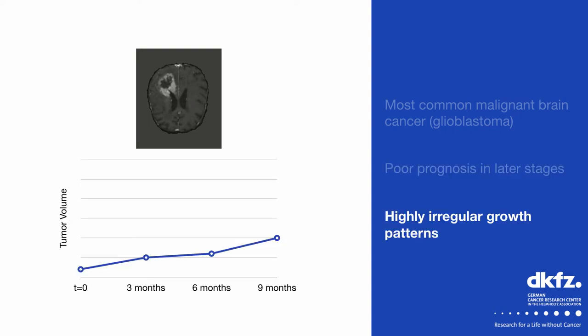One characteristic of these tumors especially important for our work is the fact that they exhibit highly irregular growth patterns. For example, for one patient the tumor size might increase more or less linearly over time. The same could be true for another patient up to some point in time, but then in a very short amount of time the tumor size will grow dramatically.